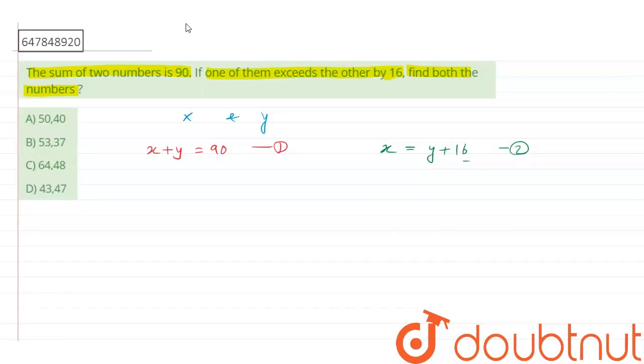So we substitute: y plus 16 plus y equals 90. This implies 2y will be equal to 90 minus 16, that is equal to 74. So y equals 74 divided by 2, which is 37.